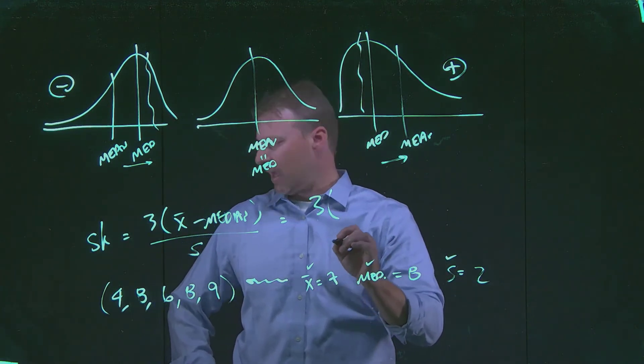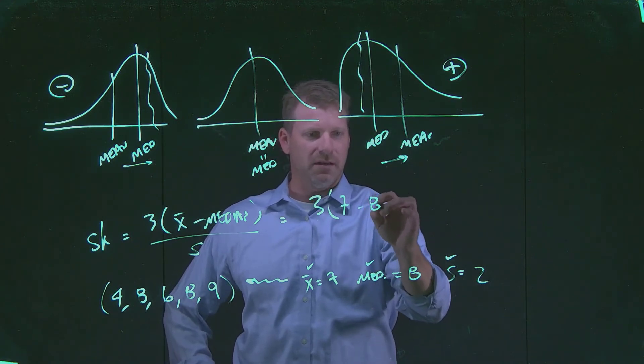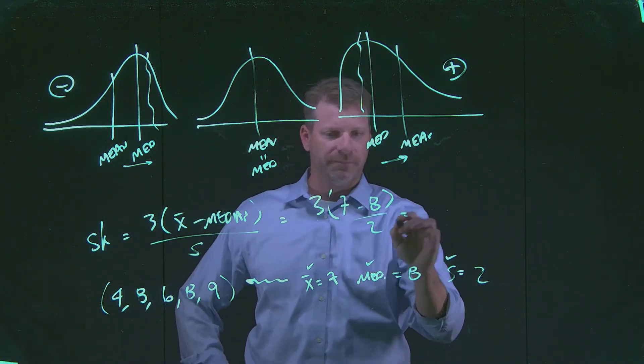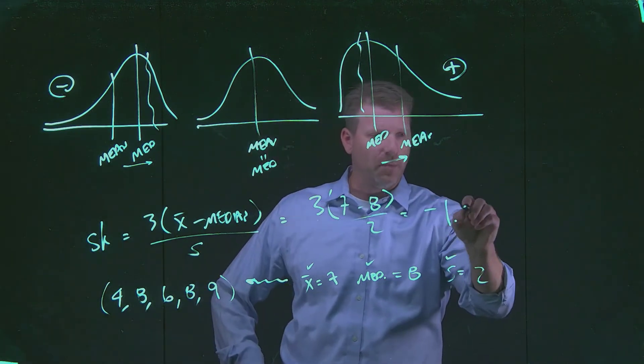If I plug those values into my skewness calculation, I end up with 3 times the X bar was 7, minus my median of 8, divided by 2. It tells me that Pearson's coefficient of skewness ends up being negative 1.50.